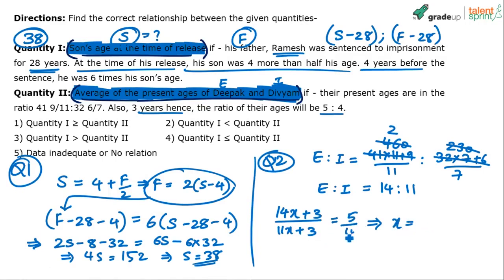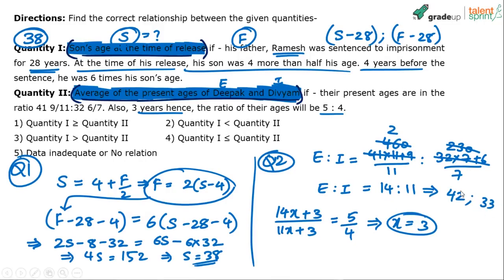x comes out to be 3. So the present ages are 14x = 42 and 11x = 33. The question asks for the average of their present ages, so average = (42 + 33) divided by 2 = 75 divided by 2 = 37.5. So Quantity 2 is 37.5.